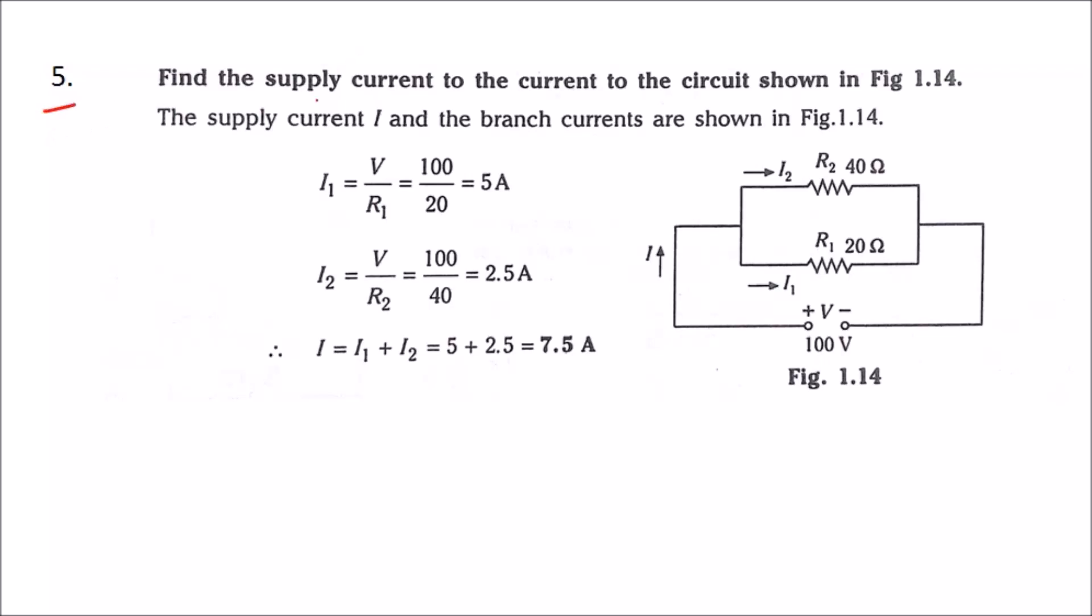Number 5: Find the supply current of the circuit shown in Figure 1.14. The supply current I and the branch currents are shown in Figure 1.14. This circuit has resistances connected in parallel.